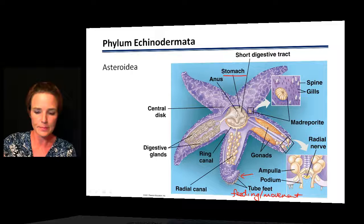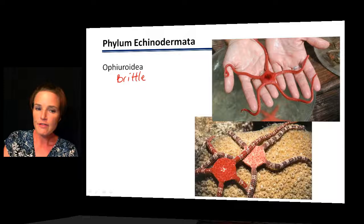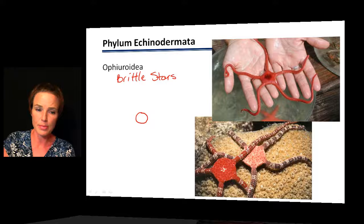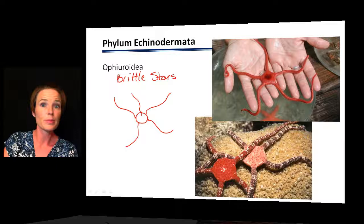The next group is the brittle stars. Brittle stars also have five parts radiating out from a central disk, but notice that it's a large disk with very long, skinny arms extending from it — a different structure from the sea stars. Brittle stars move by essentially waving their arms around, similar to the way a serpent moves.